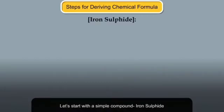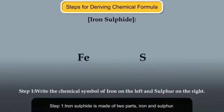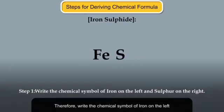Let's start with a simple compound, iron sulfide. Step 1. Iron sulfide is made of two parts, iron and sulfur. Therefore, write the chemical symbol of iron on the left and that of sulfur on the right.